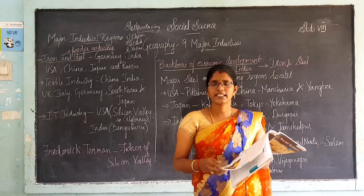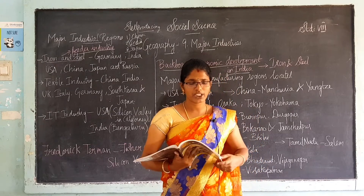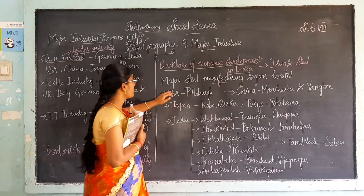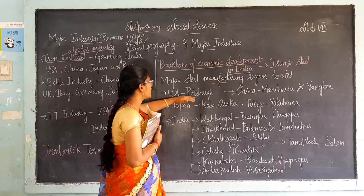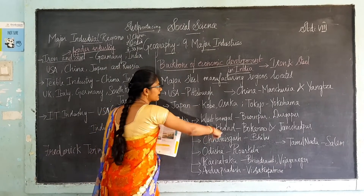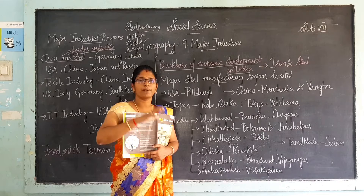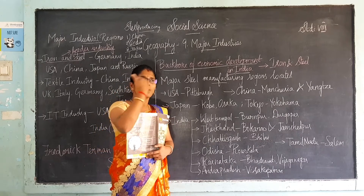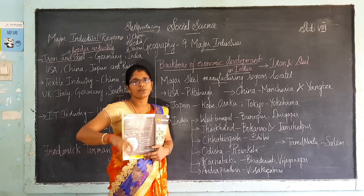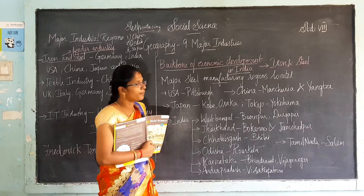This is how steel is manufactured. Where are the major steel manufacturing regions located? In USA, we have a major steel manufacturing region in Pittsburgh. We are going to compare Pittsburgh in USA with Jamshedpur in India — how steel is produced there and how it is produced here, and how the location is chosen.